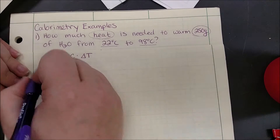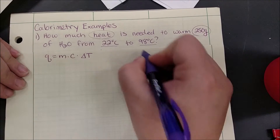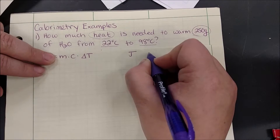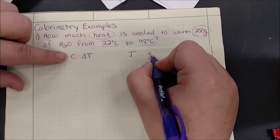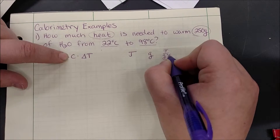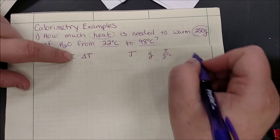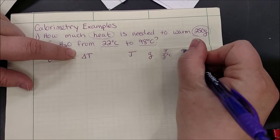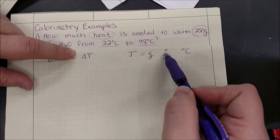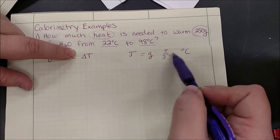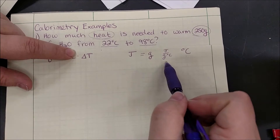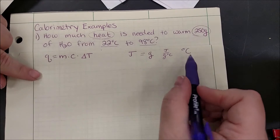Something to be reminded of is the units we're dealing with. Q is measured in joules, mass is measured in grams, specific heat is measured in joules over grams degrees Celsius, and change in temperature is degrees Celsius. If we look at this equation, grams cancel, Celsius cancels, and we're left showing that joules equal joules — a true statement confirming the equation is valid.